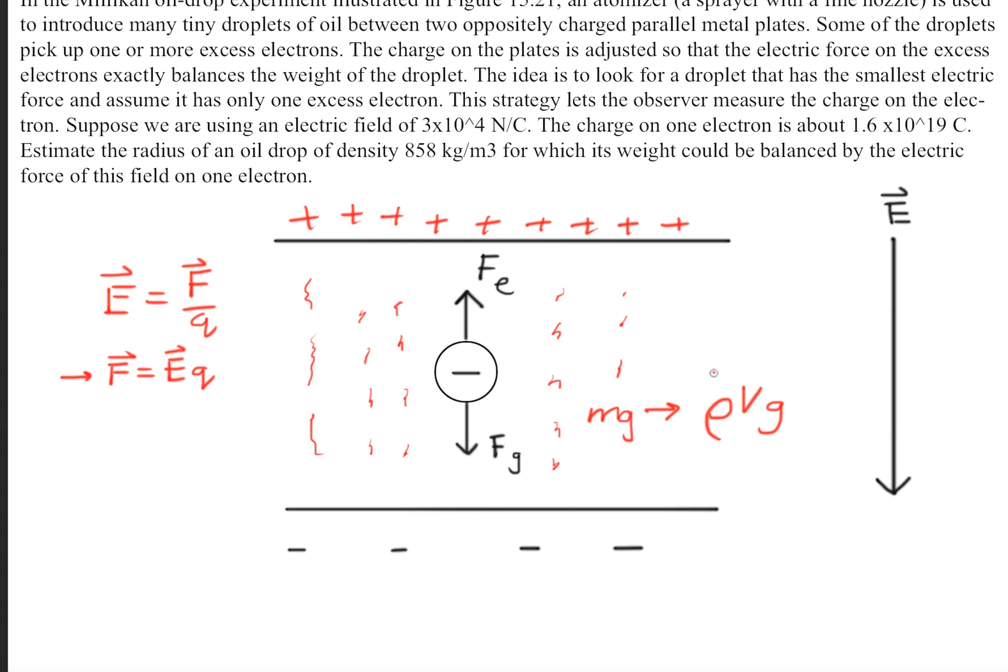What we're going to do instead is use the density times the volume, because these two are equivalent to the mass. This symbol rho (ρ) times the volume times gravity.